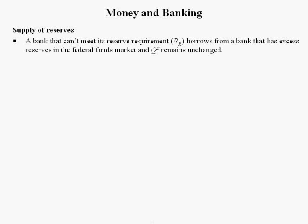A bank that can't meet its reserve requirement borrows from a bank that has excess reserves in the federal funds market, and the quantity supplied of reserves remains unchanged. Why would the quantity of reserves supplied remain unchanged? Well, imagine bank A has a million dollars in excess reserves and these reserves are in its account at the federal reserve bank branch that it does business with. Bank B does business with that same federal reserve branch,